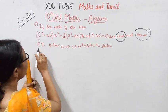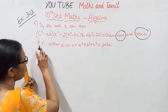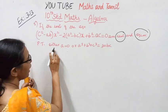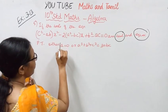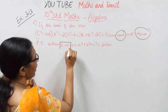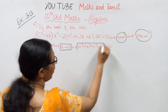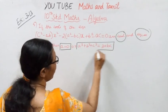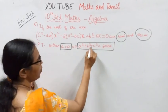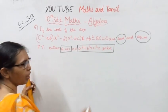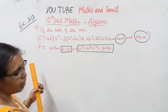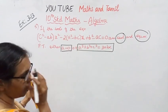Prove that: either a = 0, or a³ + b³ + c³ = 3abc.